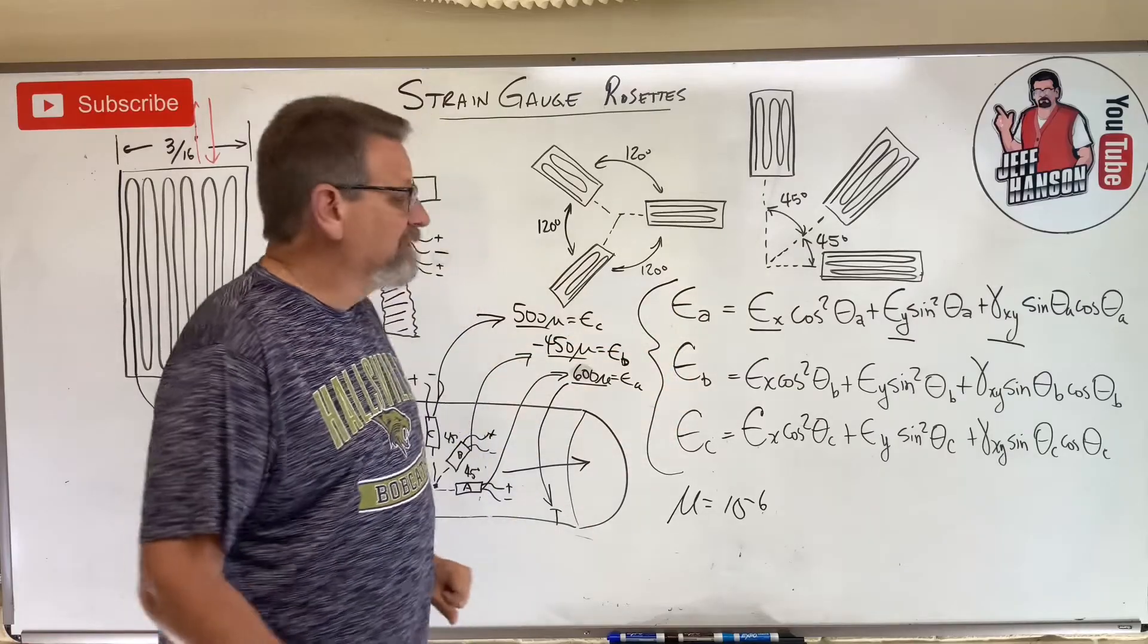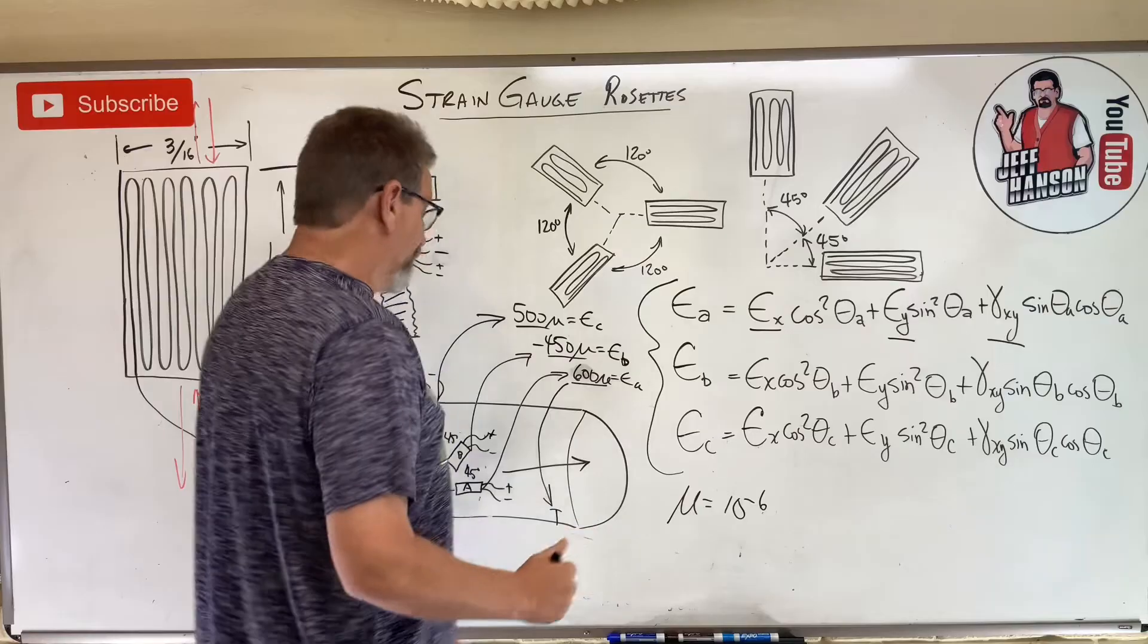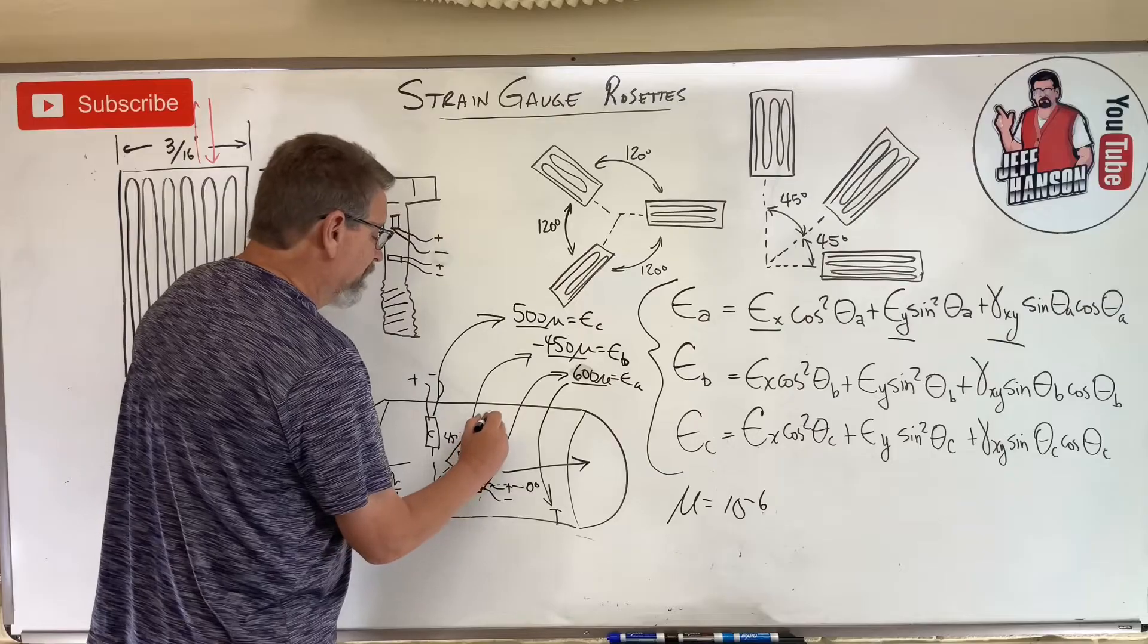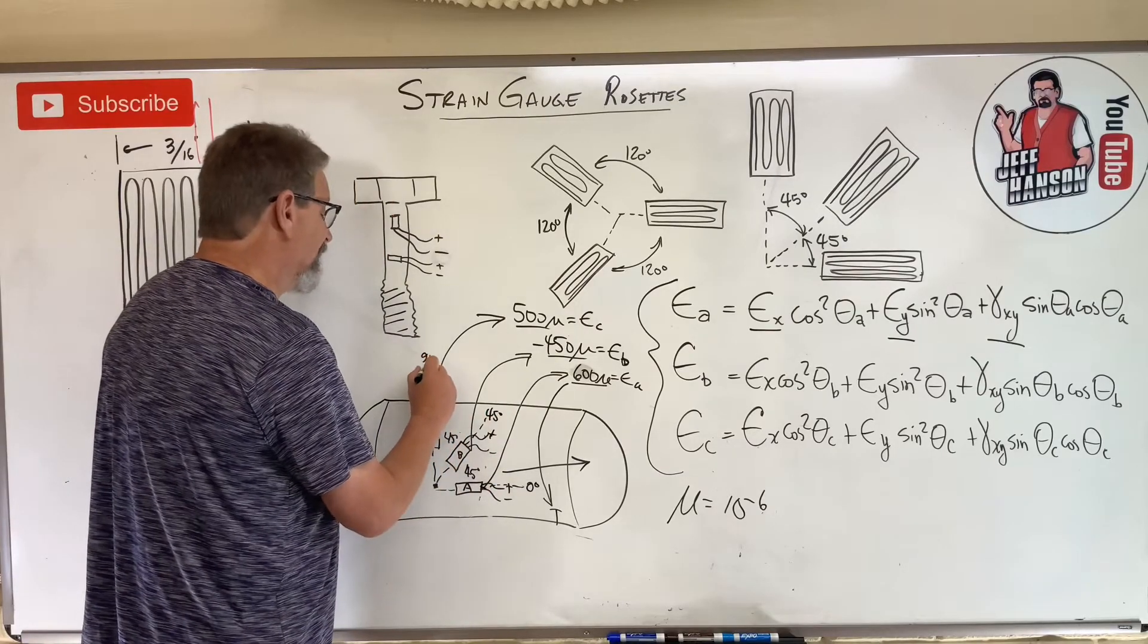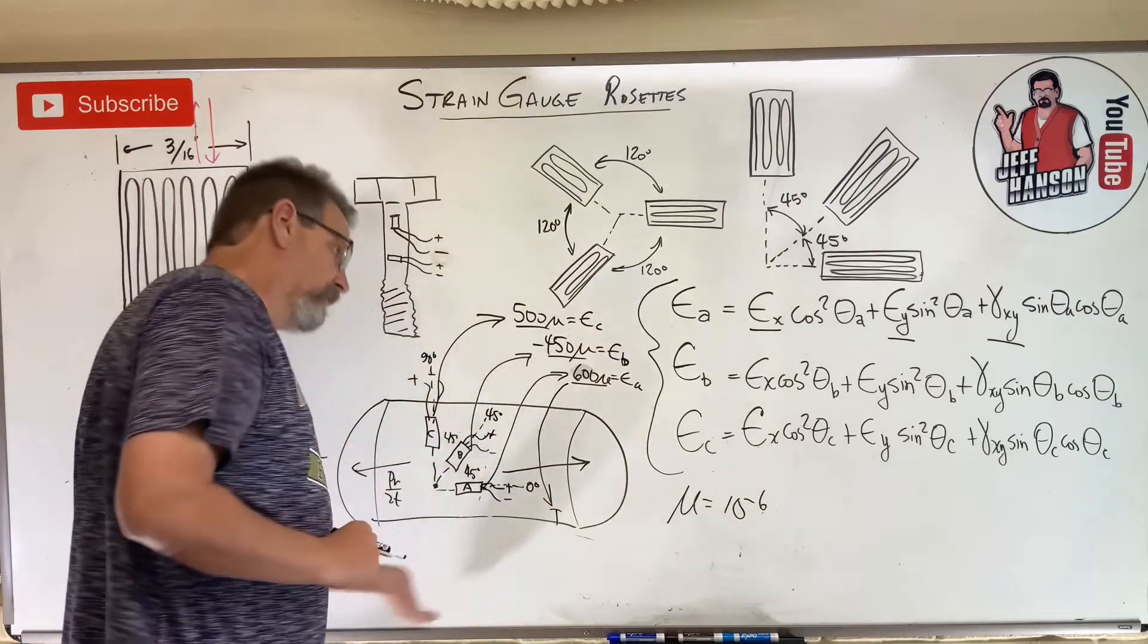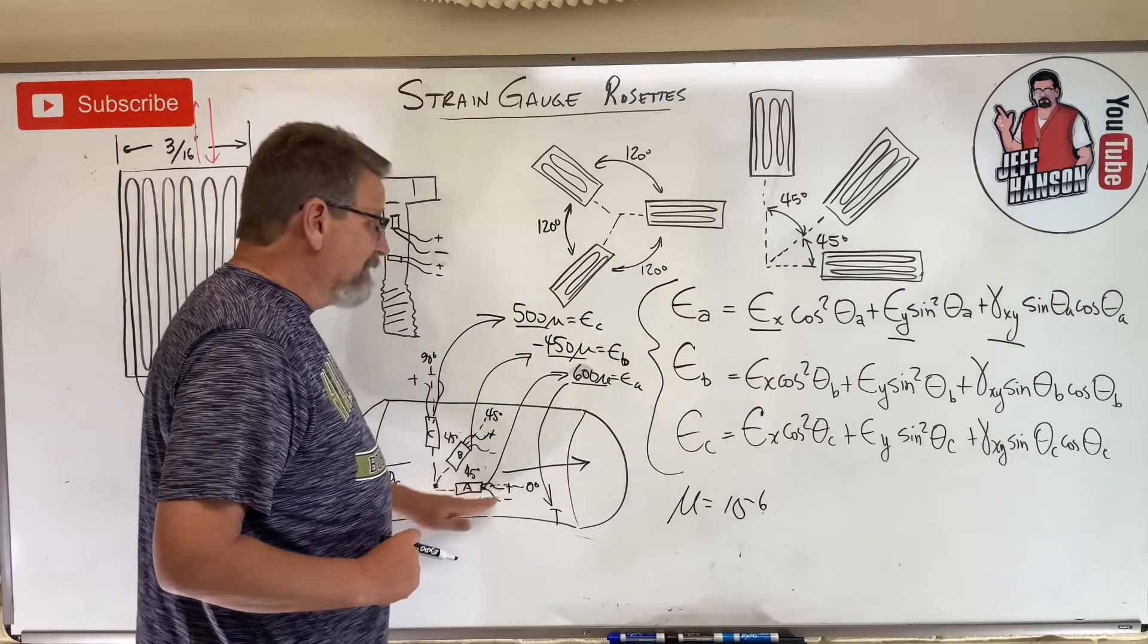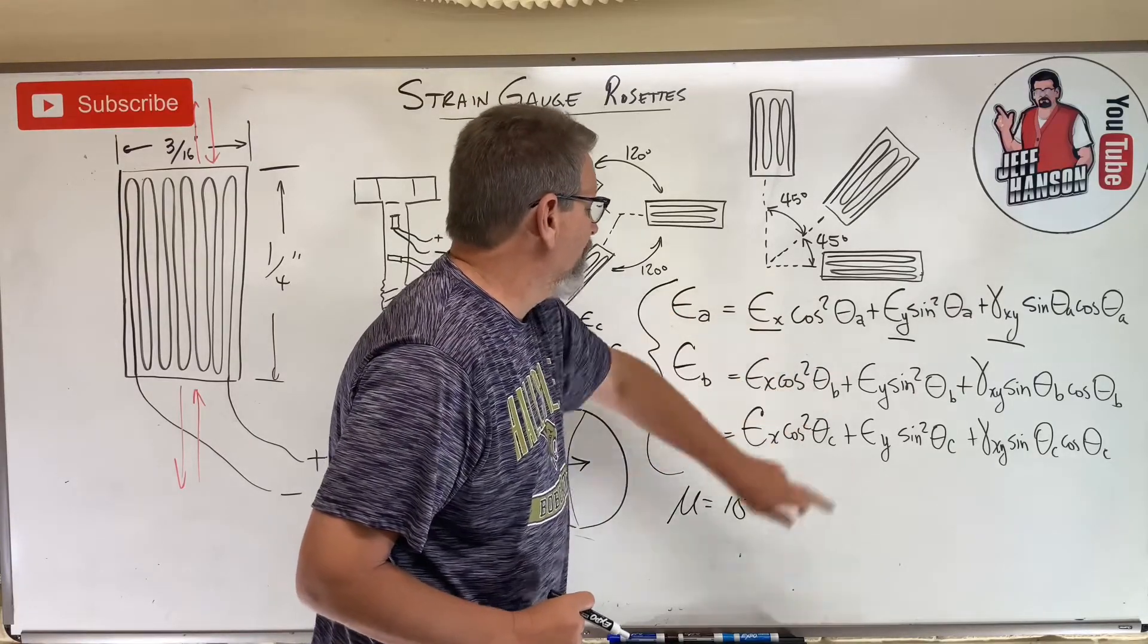But then what is this? Well, I'll tell you what that is. This guy right here is at zero degrees, this guy right here is at 45 degrees, and this one up here is at 90 degrees. It always goes from zero here all the way around. So guess what? Theta A would be zero there, theta B would be 45, and theta C would be 90.